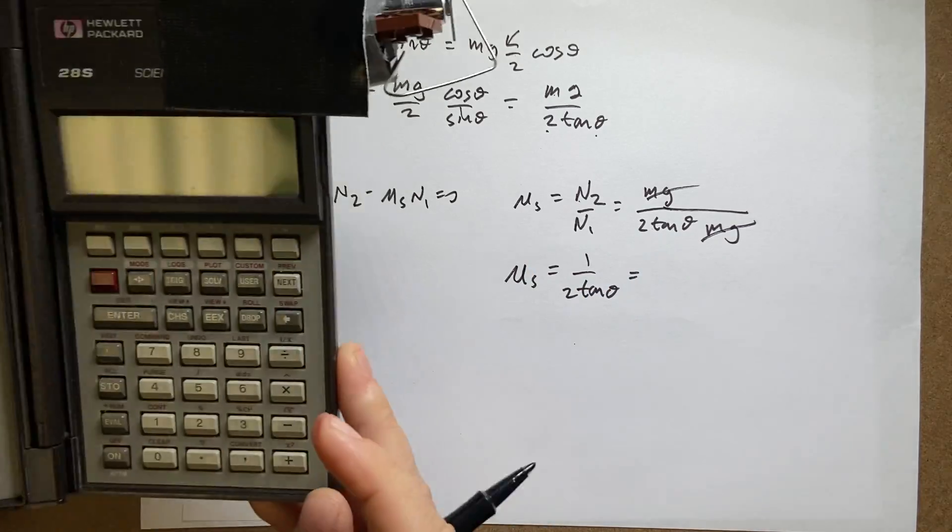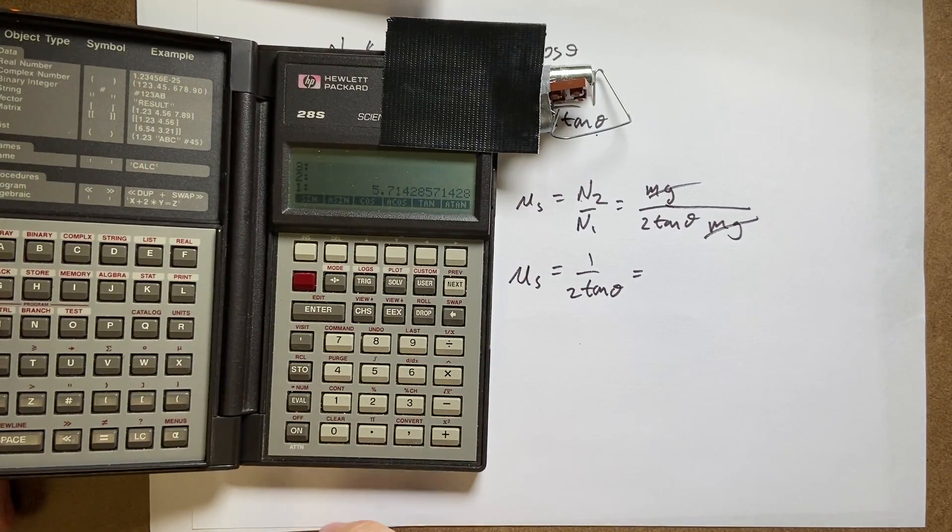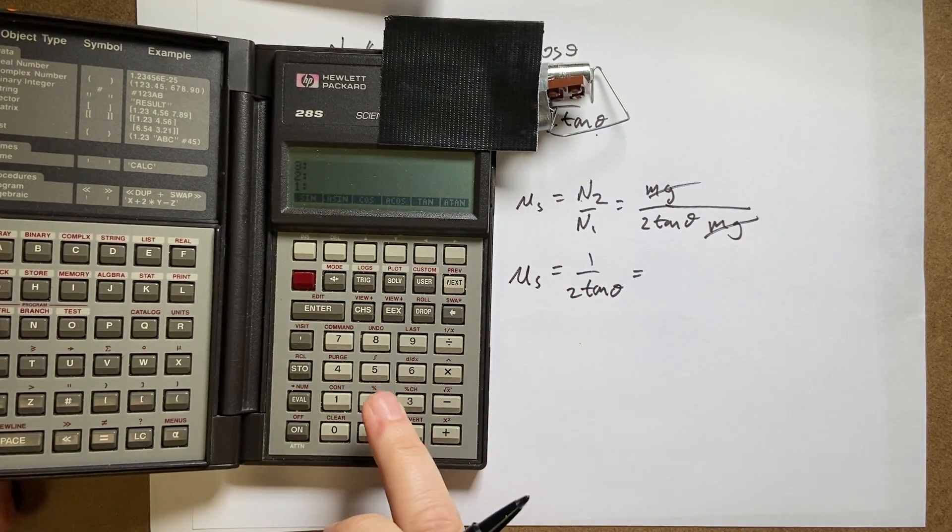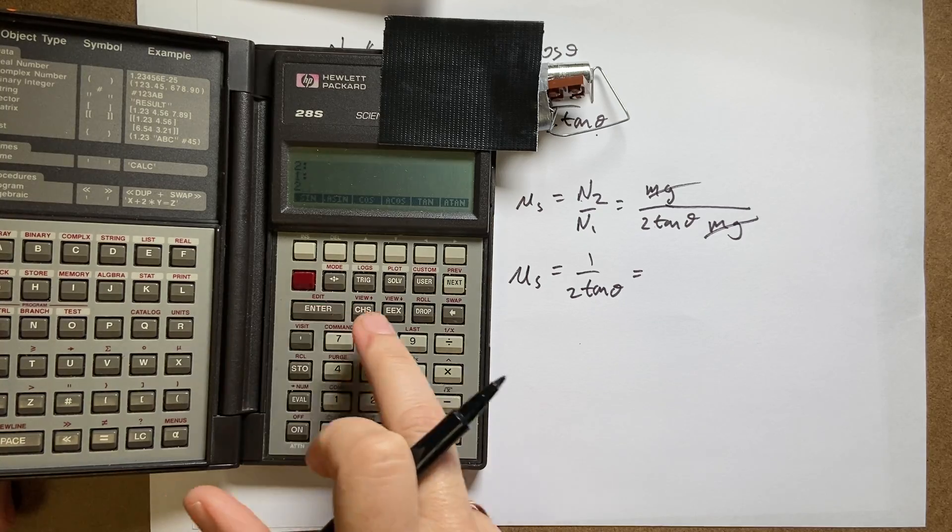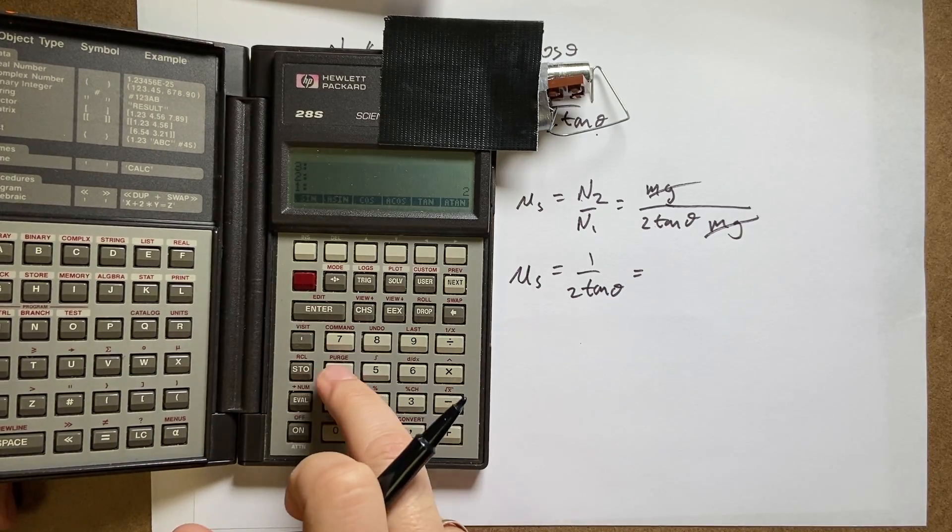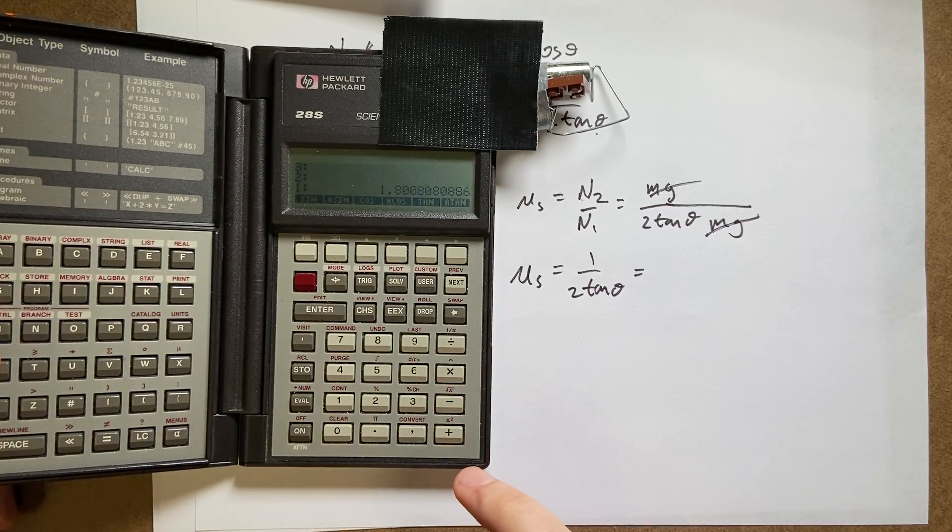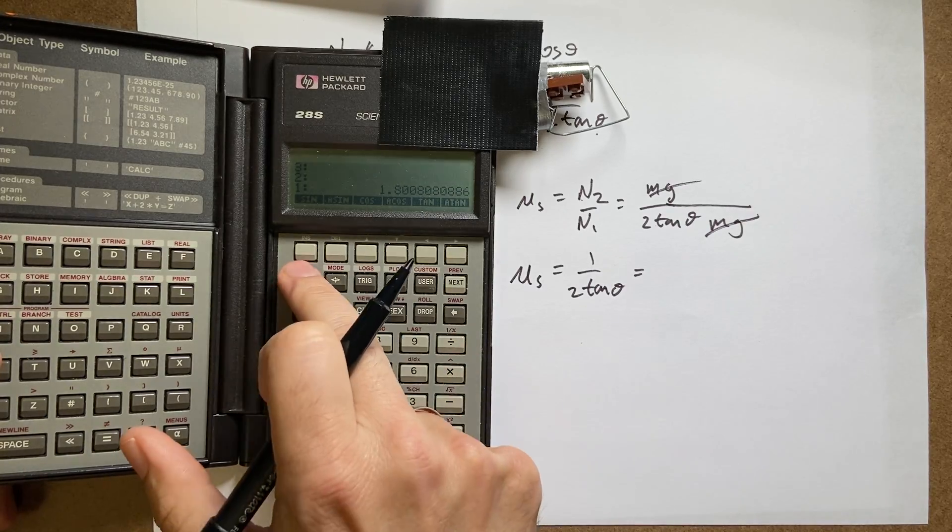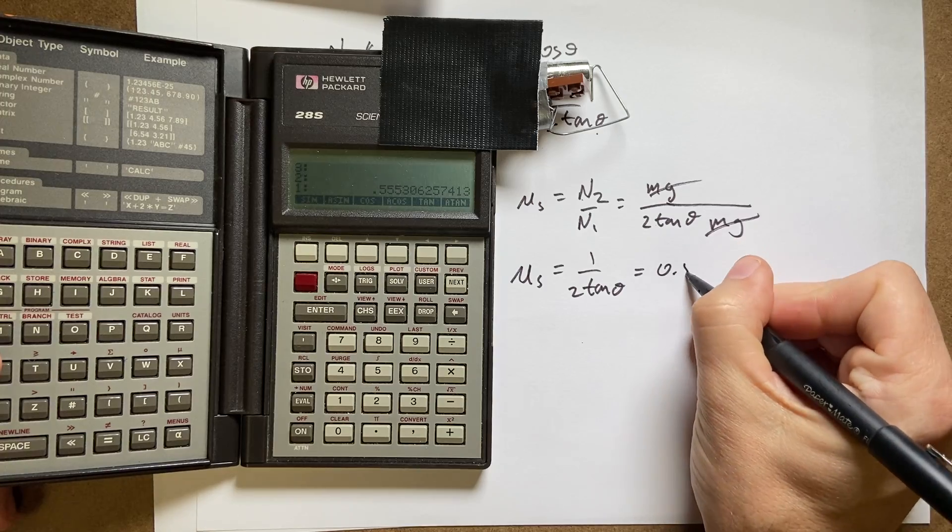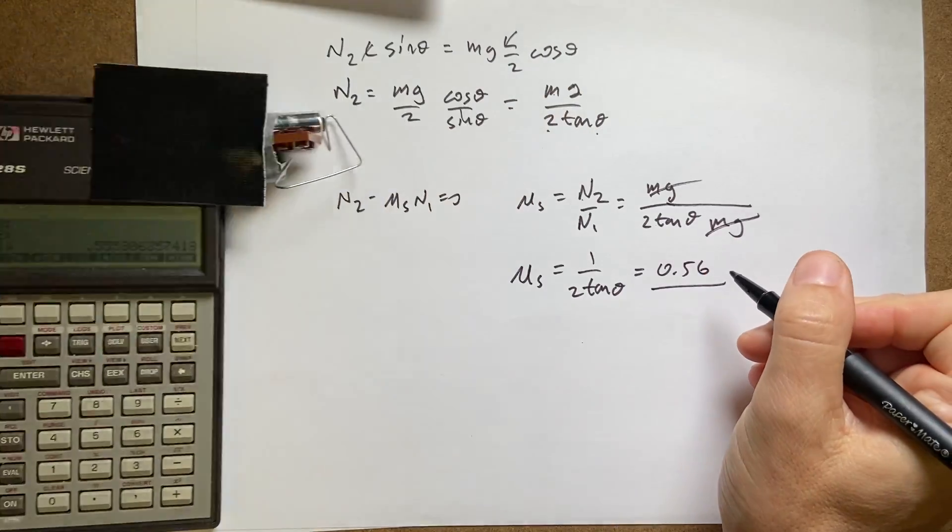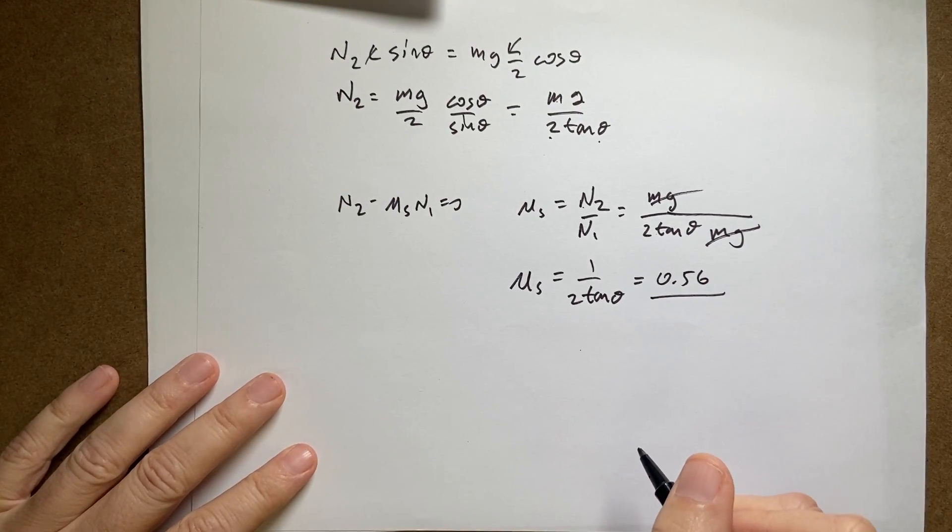So now I get mu S equals 1 over 2 tangent theta. Now we can put in our calculator. Turn on the calculator. Clear the last problem. I'll say 2, enter. My angle is 42, 42 tangent times. And then I'll just take 1 over that. And I get 0.56. There you go.